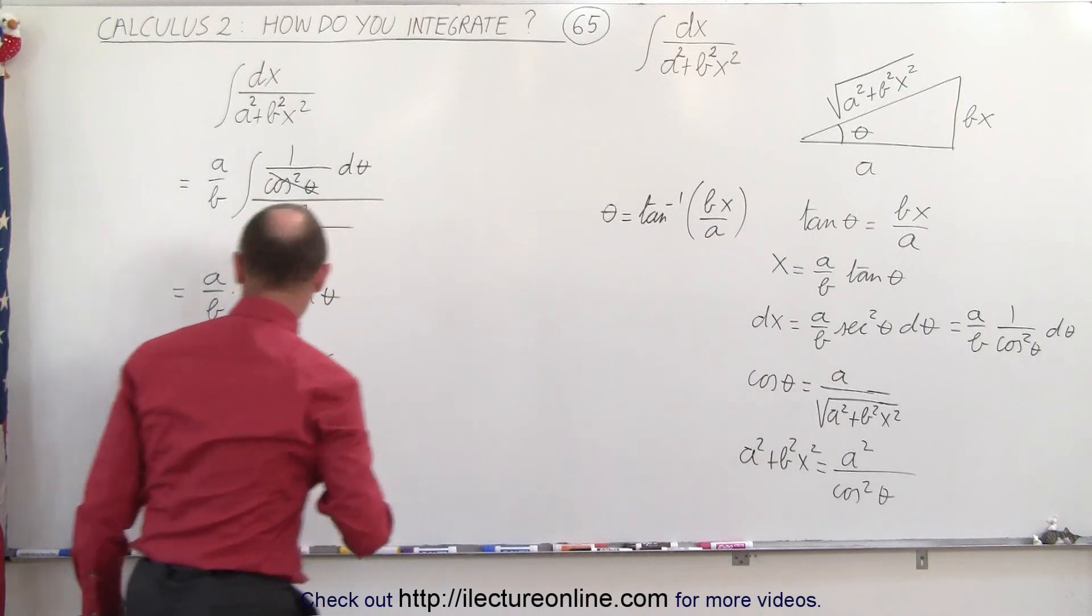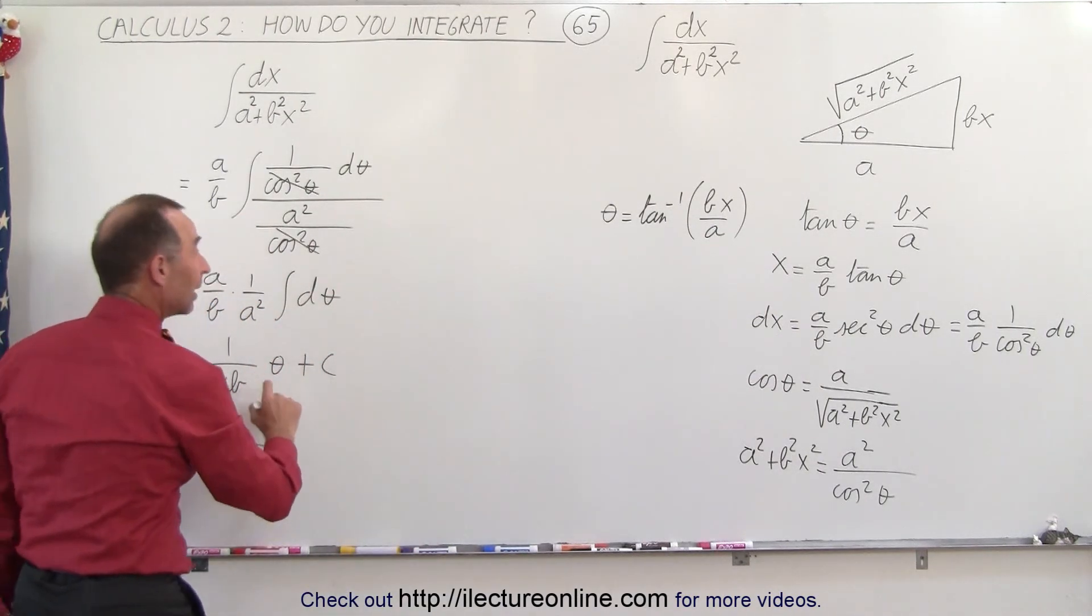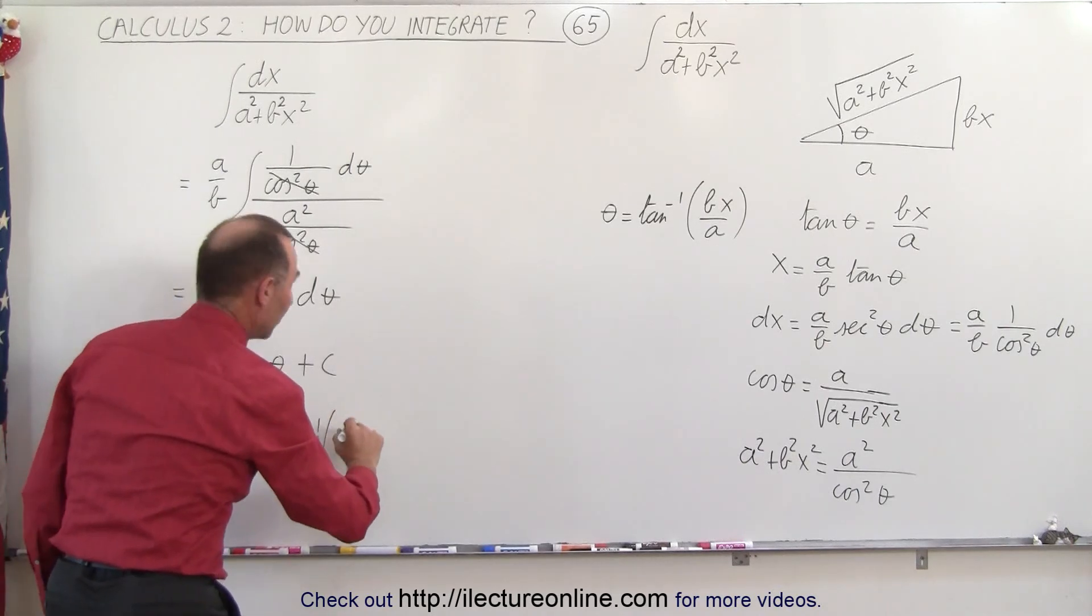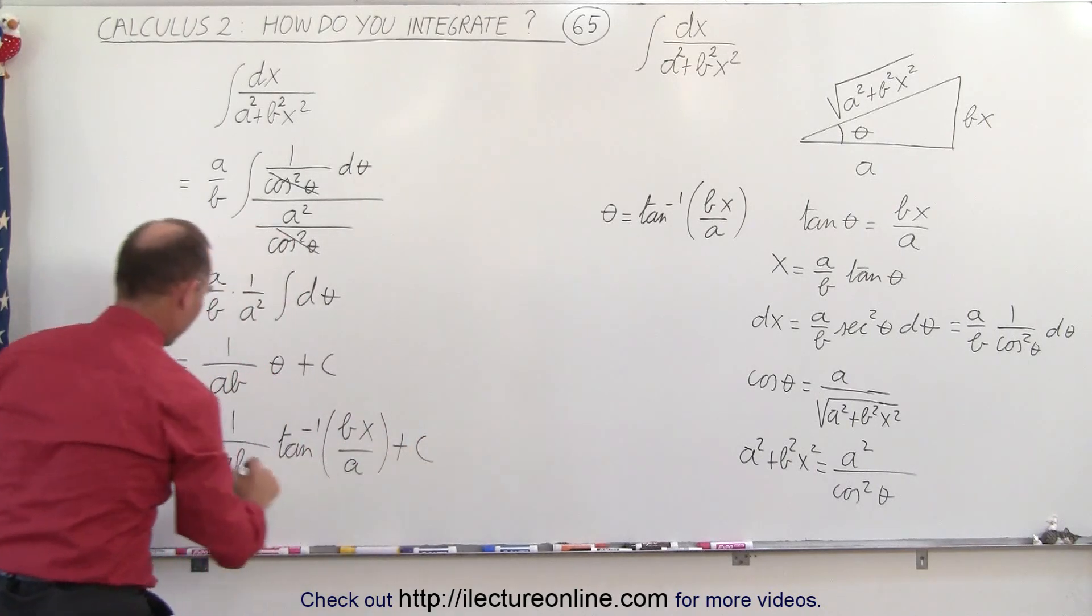Substitute that back in here, so this becomes equal to 1 over AB times the arctangent of BX over A plus a constant of integration.